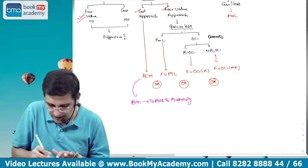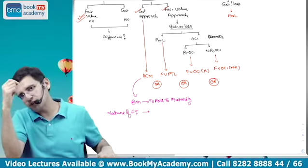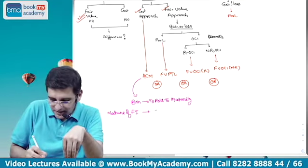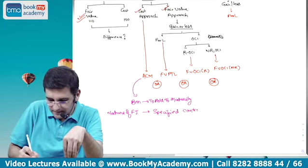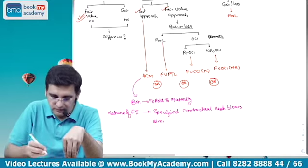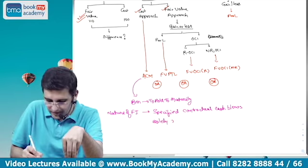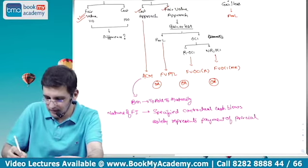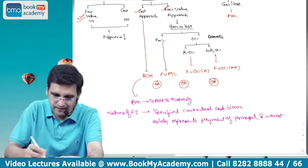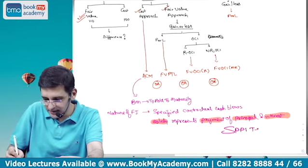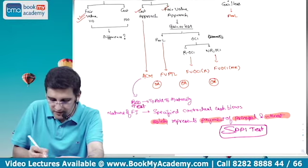When I say hold to maturity, it also means the nature of the financial instrument should have a maturity. So the choice of method depends on two things: one, what is my business model — this is entity-specific; and two, what is the nature of the instrument — the instrument should have specified contractual cash flows that solely represent payment of principal and interest. This is also termed as the SPPI test — Solely for Payment of Principal and Interest. So I have two tests: the Business Model Test and the SPPI Test.